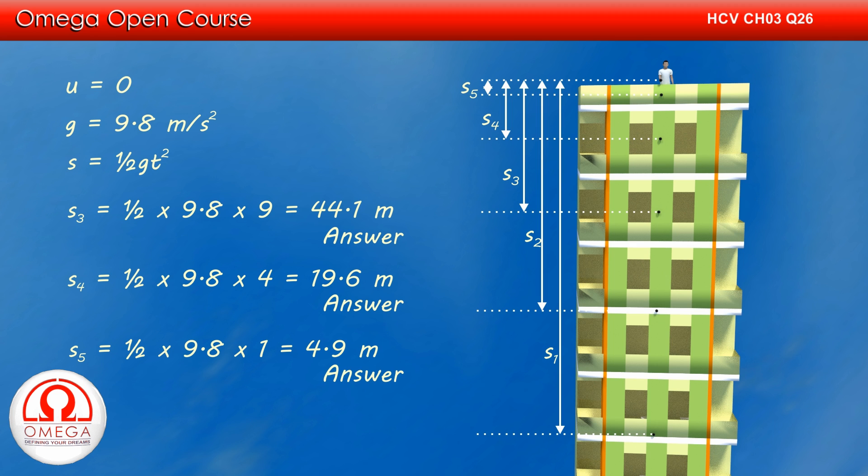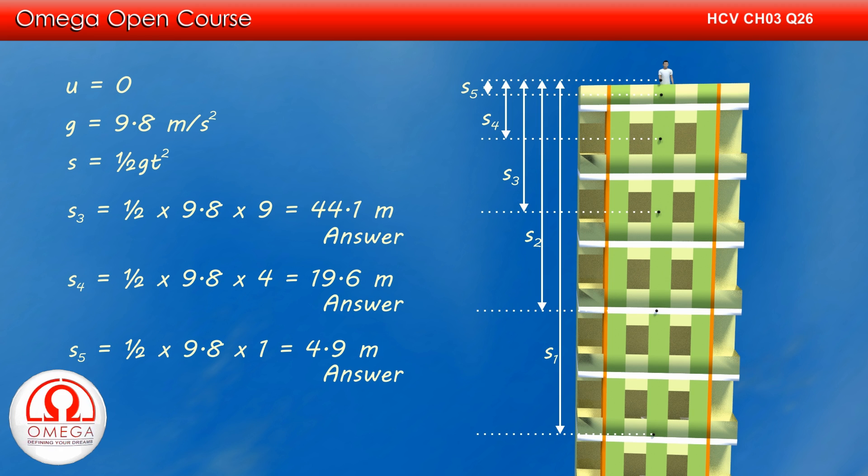These are the positions of the third, fourth, and fifth balls from the top of the building. This is our answer.